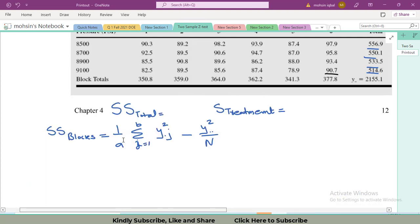In this formula, A equals the number of treatments that are four: 8500, 8700, 8900, and 9100. Y double dot equals 2155 and n equals 24. Upon putting the values I will get my result.